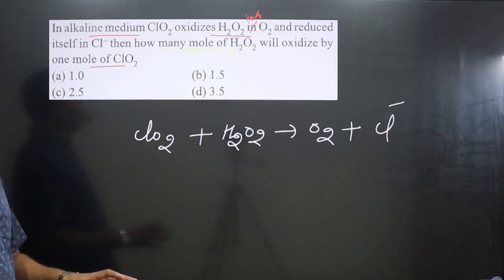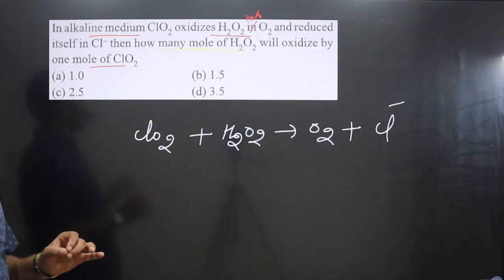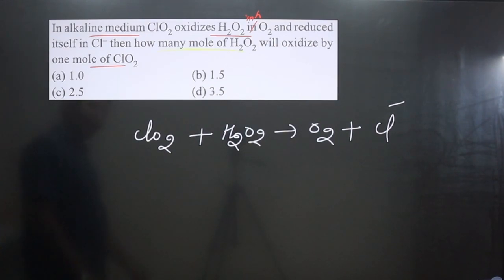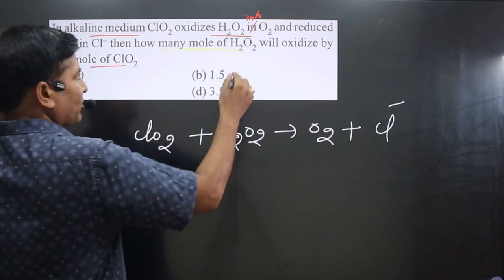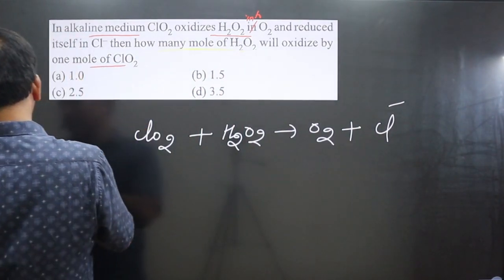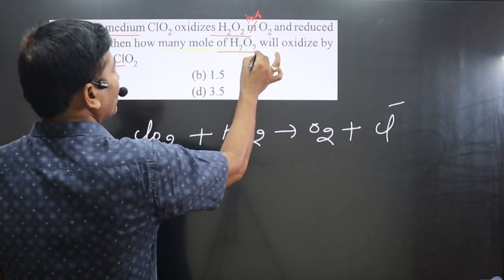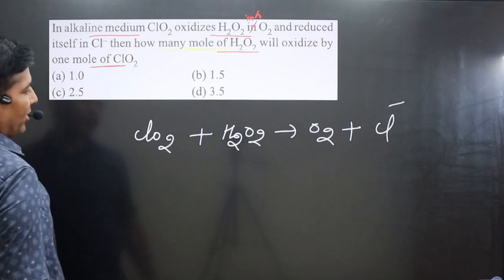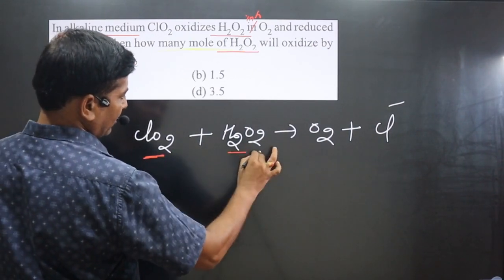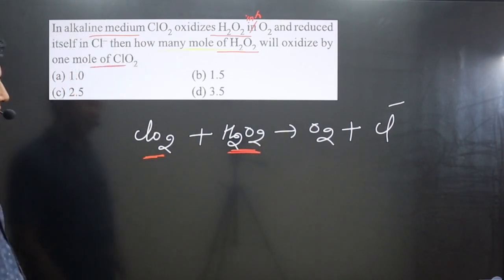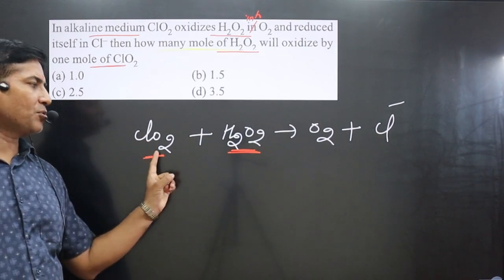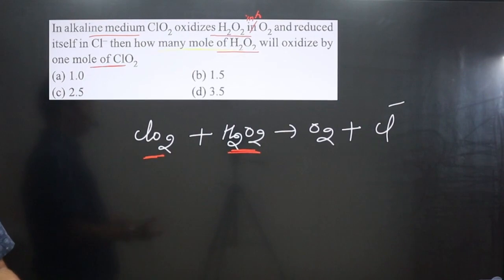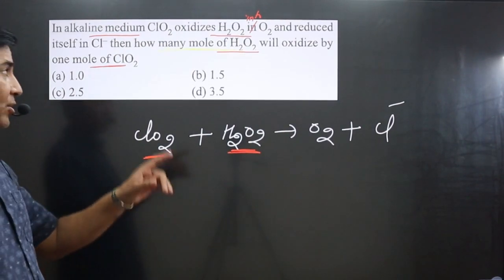In this kind of question we apply the concept of equivalence. The question is asking us to calculate the number of moles of hydrogen peroxide given the moles of ClO₂ — it is talking about two reactants. So we can say: number of equivalents of this substance equals number of equivalents of that substance. Based on the data provided, we apply the formula of equivalence.